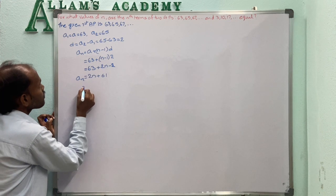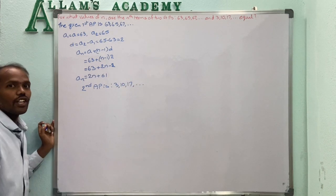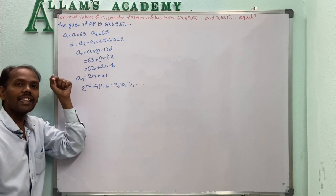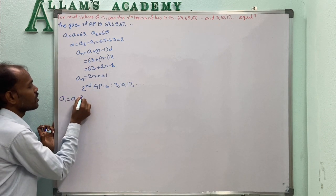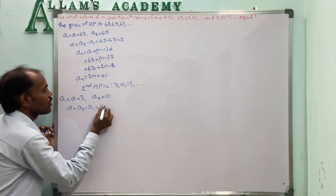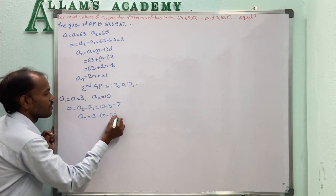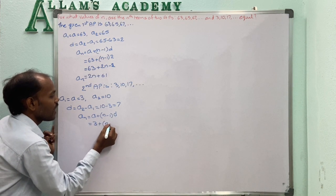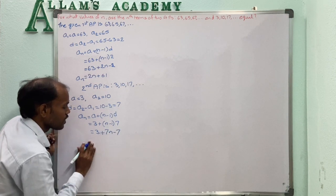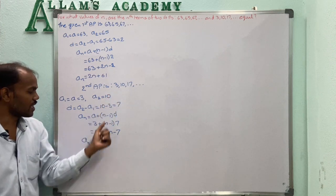The second AP is 3, 10, 17, and so on. Here A1 equals 3, A2 equals 10, and D equals 10 minus 3 equals 7. The general term AN equals A + (N-1)D = 3 + (N-1) × 7 = 7N - 7 + 3 = 7N - 4. The Nth term of the second series is 7N - 4.